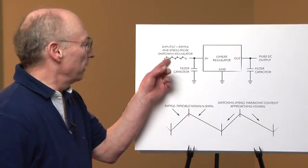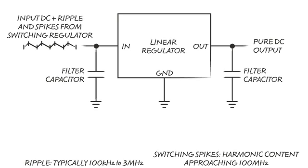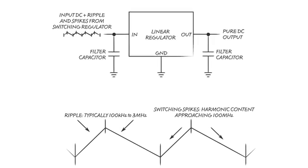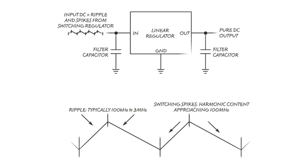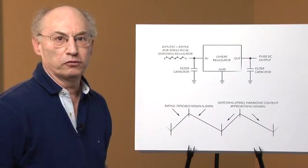People want to regulate the output of switching regulators with linear regulators to produce nominally a pure DC output. In fact, the output of the switching regulator is composed of switching regulator low frequency ripple residue along with very wideband harmonic residue associated with the switching intervals of the switching regulator.